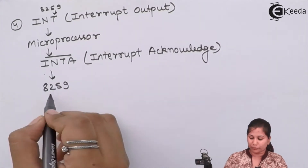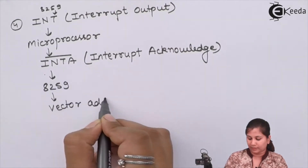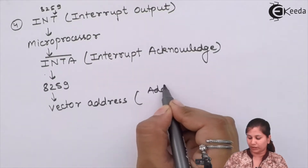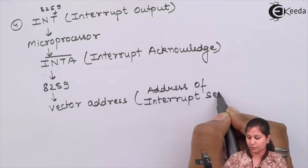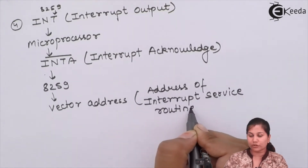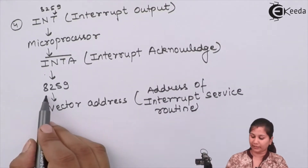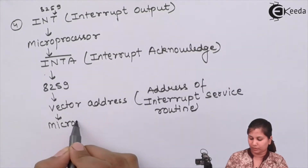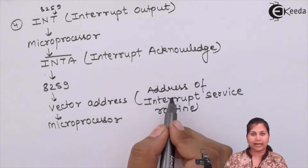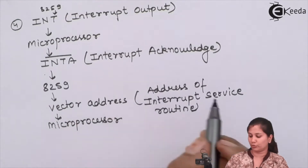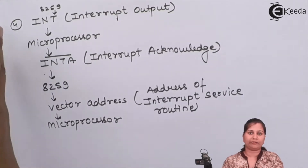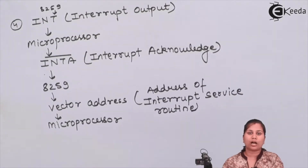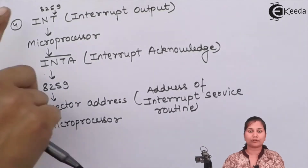The 8259 then provides the vector address — the address of the interrupt service routine to be executed. The address of the service routine is provided by the 8259 to the microprocessor. The microprocessor jumps to that address and executes the service routine. After execution, the 8259 checks whether any more interrupts are pending, and if so, the same procedure is repeated.